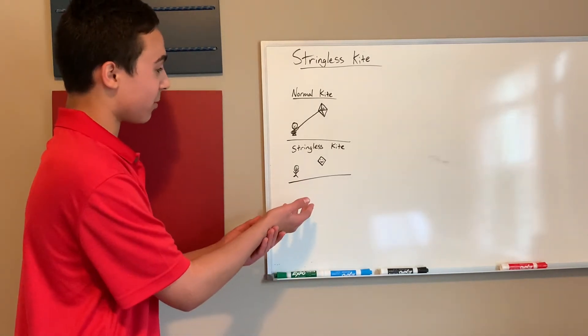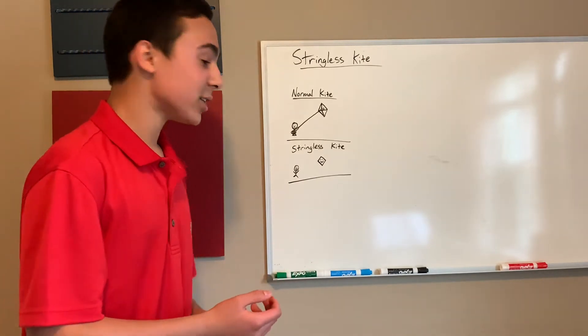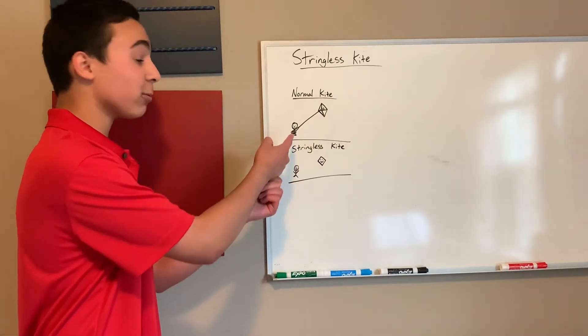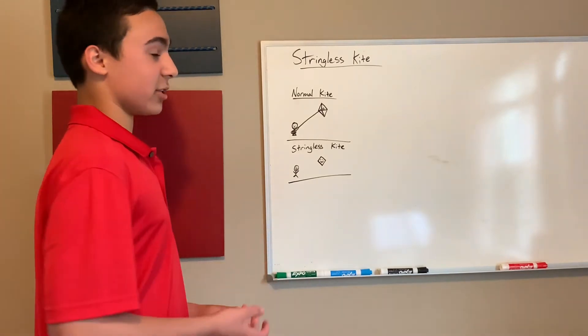Here we have a diagram of a boy playing with his stringless kite. The kite is happy because it can go wherever it wants, and the boy is happy because he's not all wrapped up in the string. Therefore, the clearly better option is to buy the stringless kite.